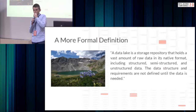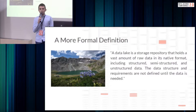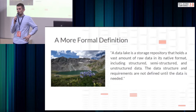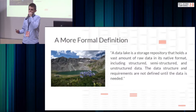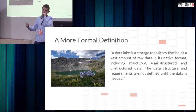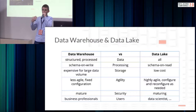A more formal definition says that a data lake is a storage repository that holds a vast amount of raw data in its native format — both structured, semi-structured, and unstructured data. The data structure and requirements are not defined until the data is needed. Here we can see the first distinction between data lake and data warehouse: with data warehouses we have structured data with a schema on top of it, while the main idea with data lake is to keep everything as raw as possible. We collect and extract data from our source, persist it in the data lake, and then give it structure when we try to generate insights.